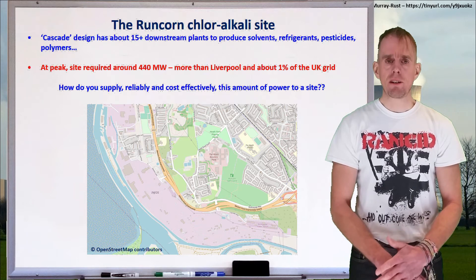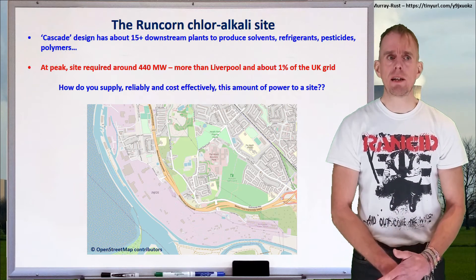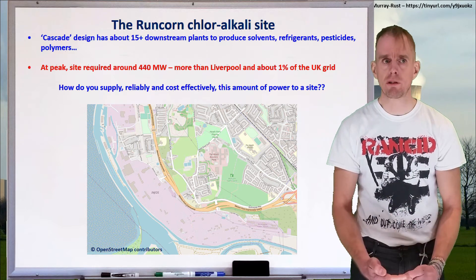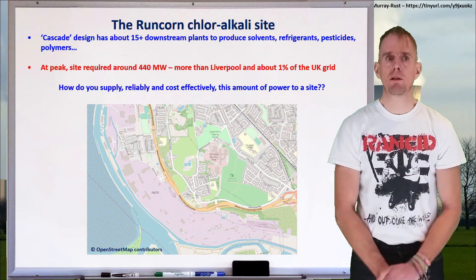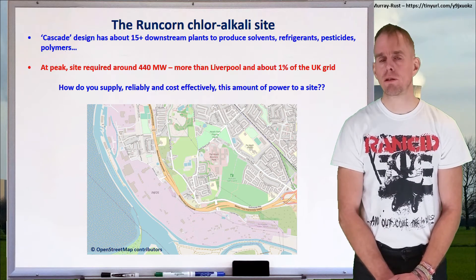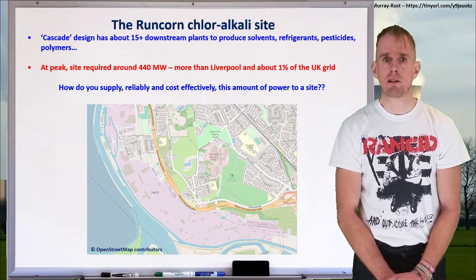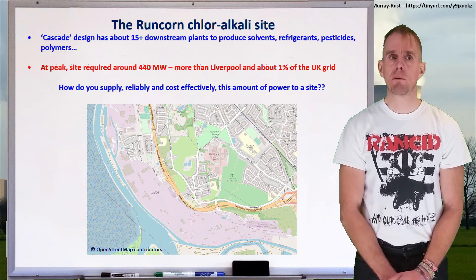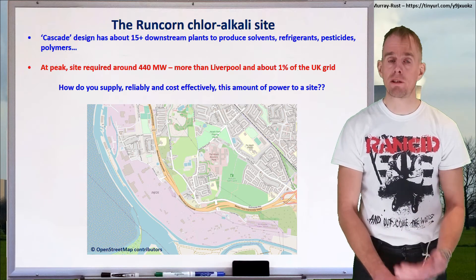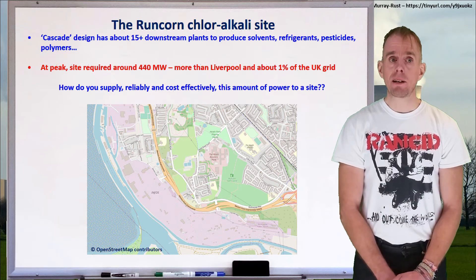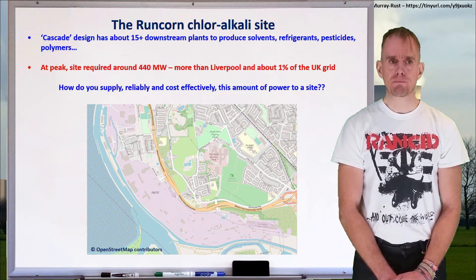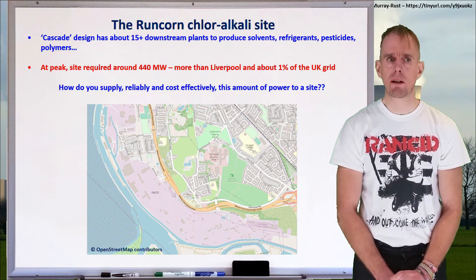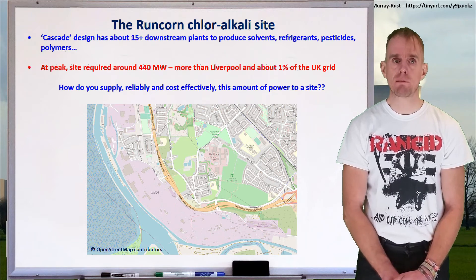The site has a cascade design: the chlorine cell rooms produce chlorine and caustic soda, with about 15 downstream plants producing solvents, refrigerants, pesticides, and polymers. At its peak, the site required about 440 megawatts of electrical power — more than the city of Liverpool nearby — which was roughly 1% of the UK power grid. The key challenge for electrochemical sites is how to supply this very large amount of power reliably and cost-effectively.